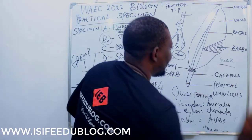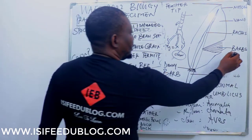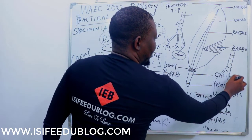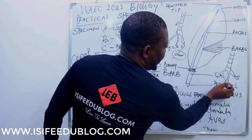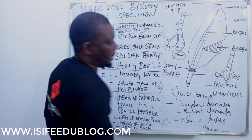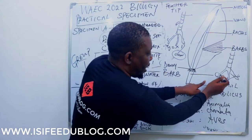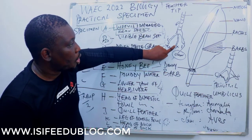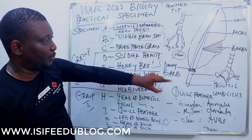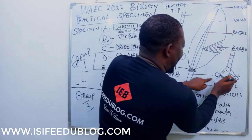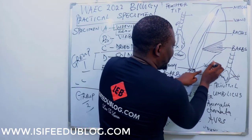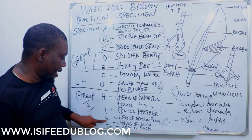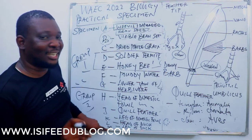The slender beak of a duck is used for sucking or filtering muddy water. There is a relationship between specimen L and muddy water — the slender beak of a duck can be used for sucking or filtering water. The habitat of the duck is aquatic. The leg of a duck, just like the leg of a domestic fowl, has scales, but the leg has a web foot — web digits — for swimming.